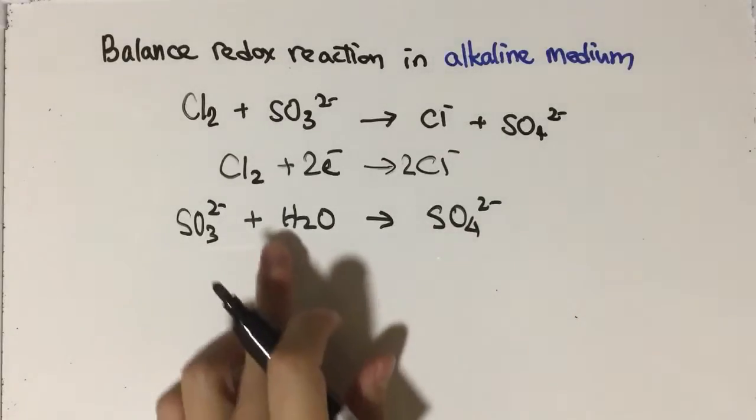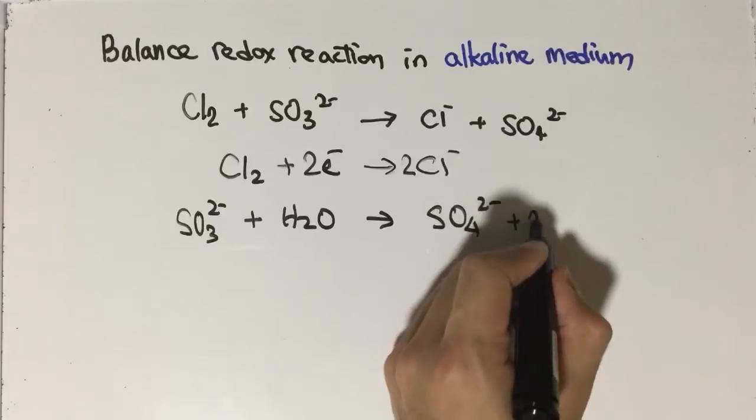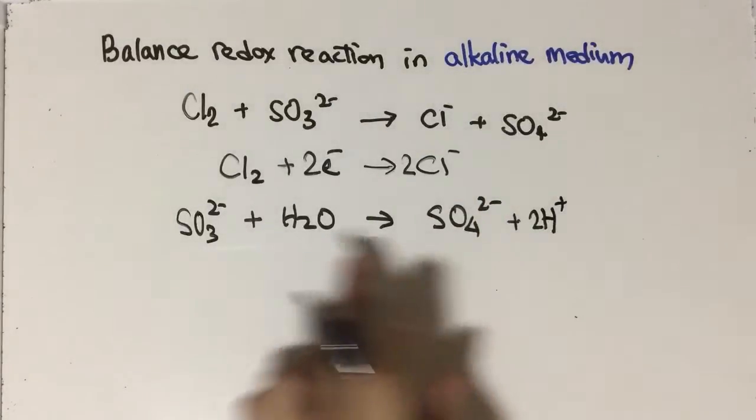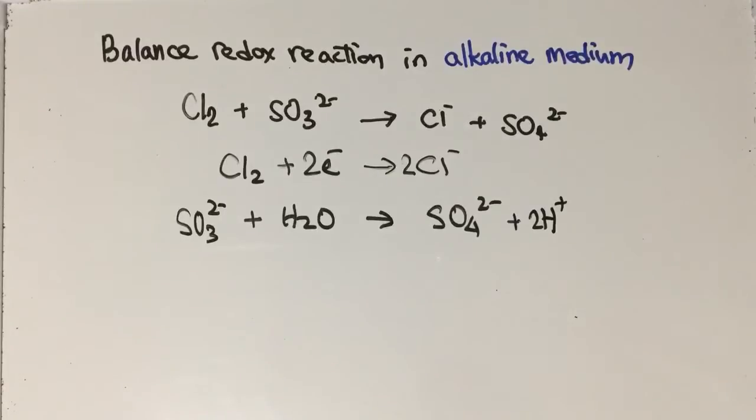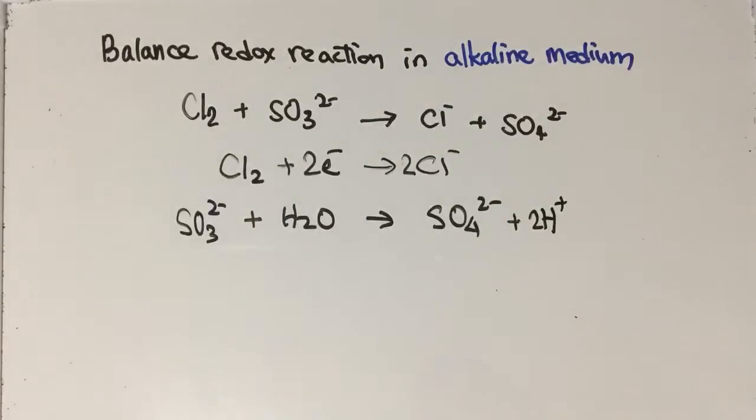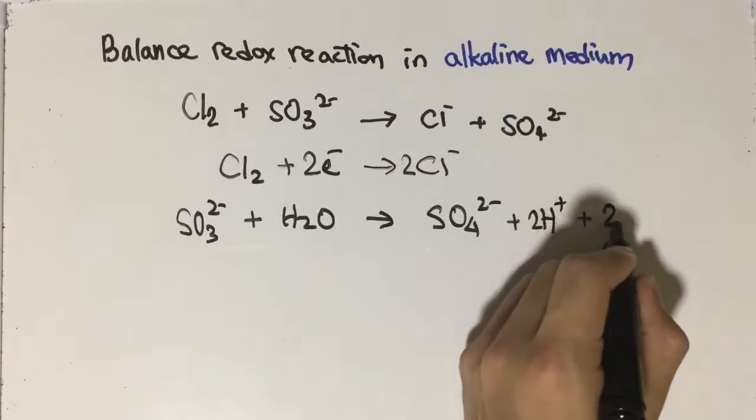Secondly, you have to balance the hydrogen. We have two hydrogen ions on the product side, so that's balanced. Last but not least, you have to balance the charge. The reactant side here has two minus, and the product side here will be zero, so you have to add two electrons on the product side: SO₃²⁻ + H₂O → SO₄²⁻ + 2H⁺ + 2e⁻.